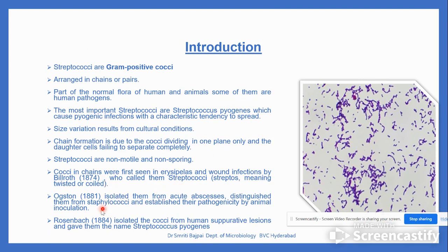They were first seen in erysipelas and wound infection by Billroth in 1874, who called them Streptococci. Then Ogston in 1881 isolated them from the abscess, and Rosenbach in 1884 isolated them from human suppurative lesions.